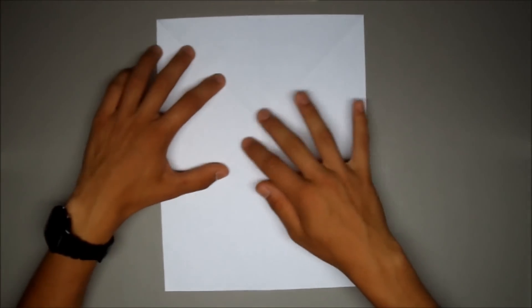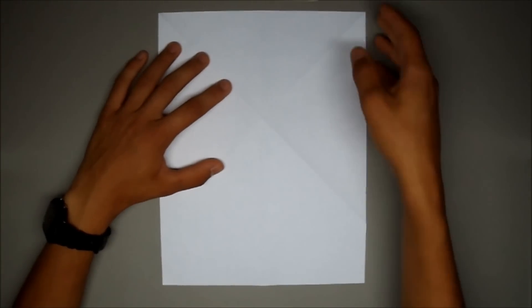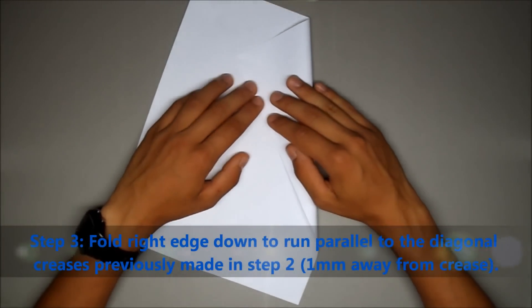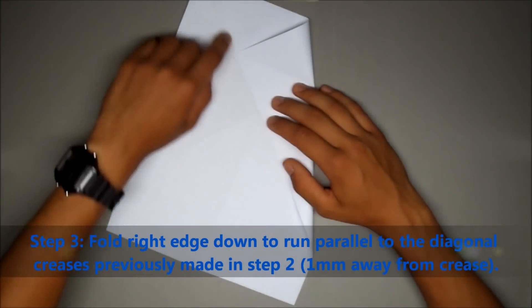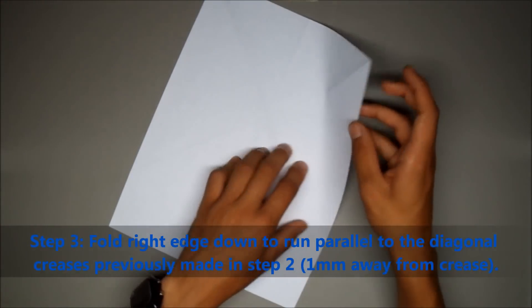So turn it to the side where you can see the crease easiest, and the third step would be to take this edge and fold it towards the creases you made that just run from the corner to the lower edge.